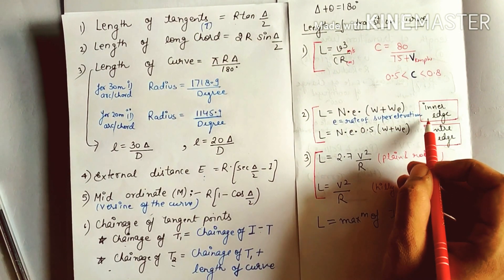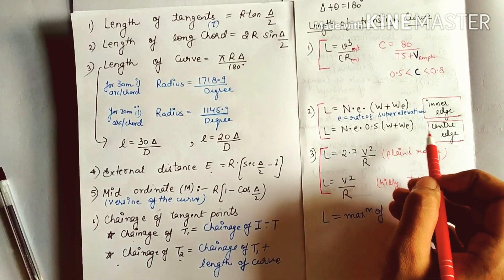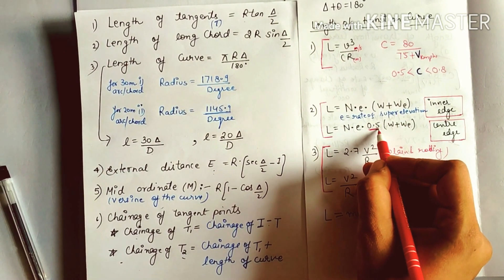If the pavement is rotated about inner edge, the formula will be this. If the pavement is rotated about center edge, we have to multiply it by 0.5.